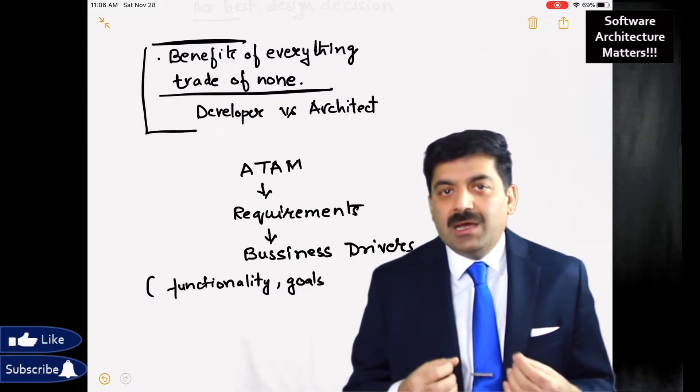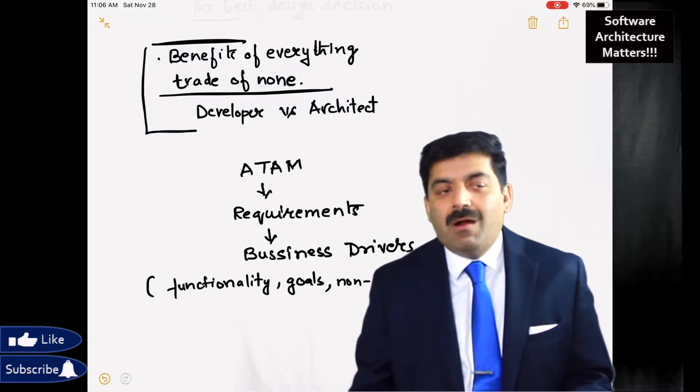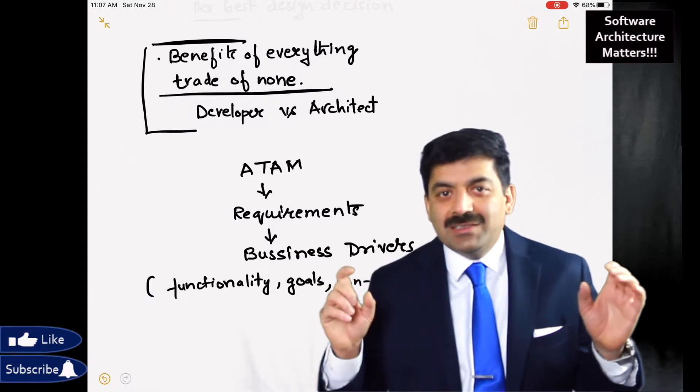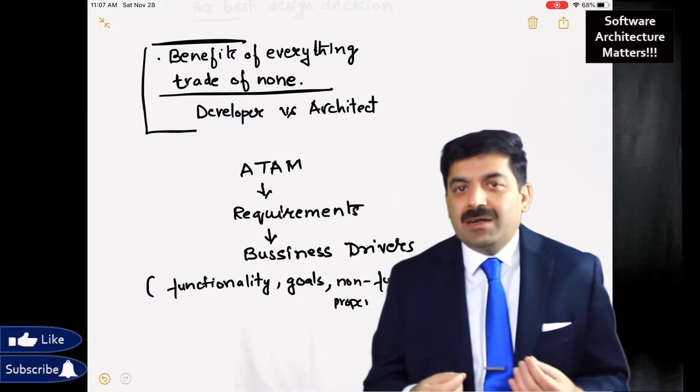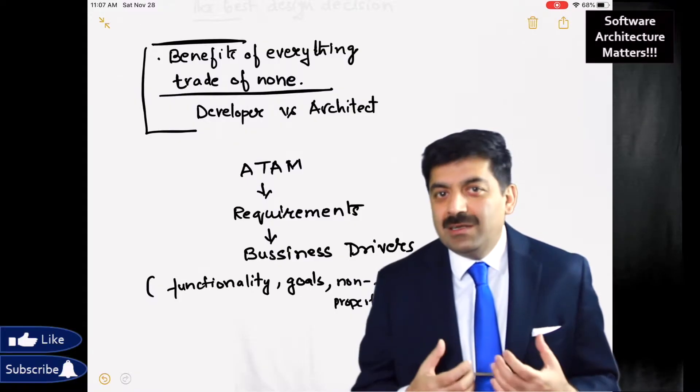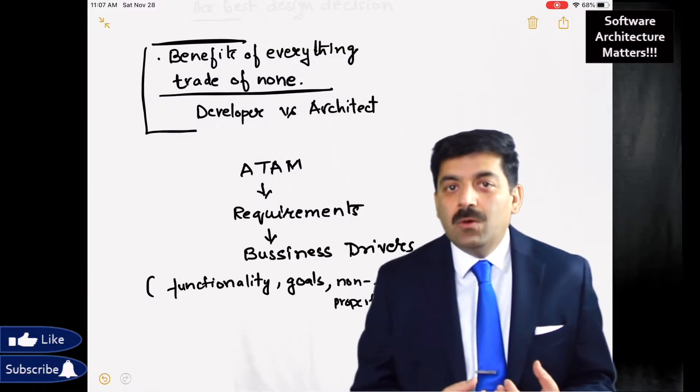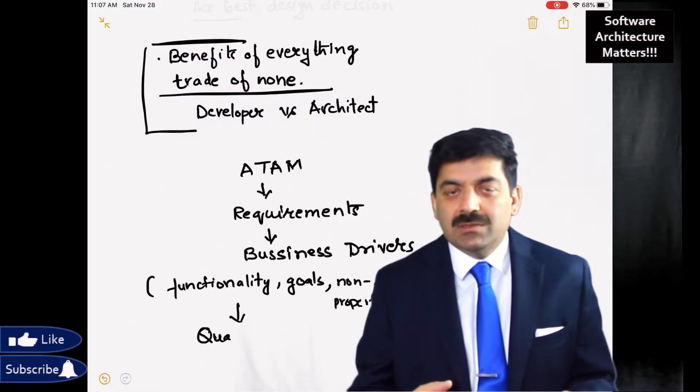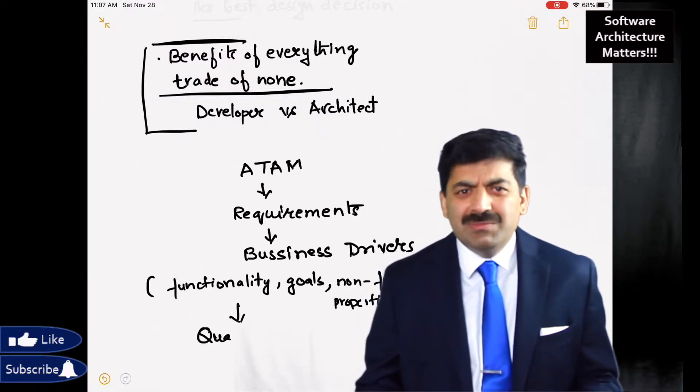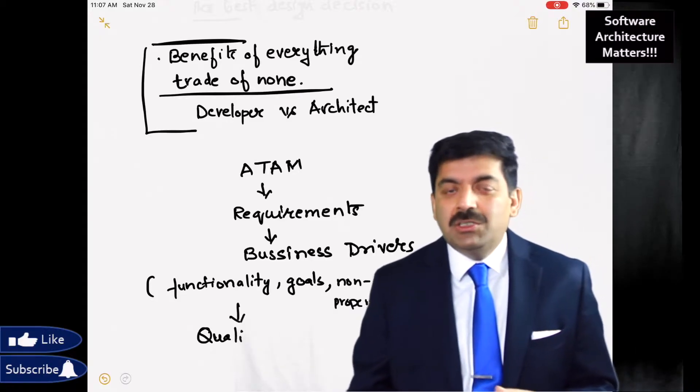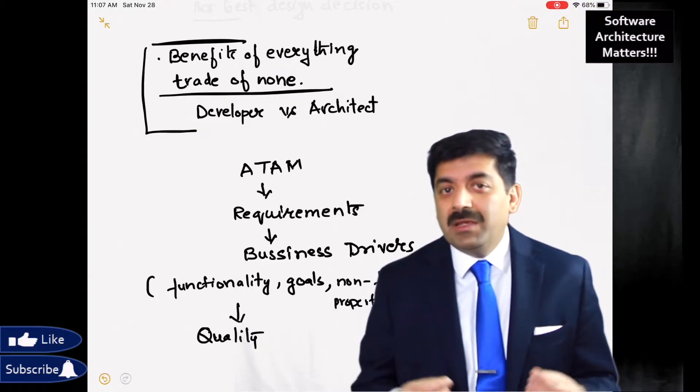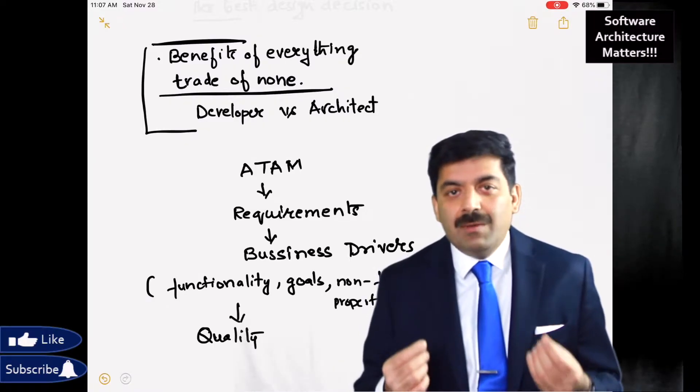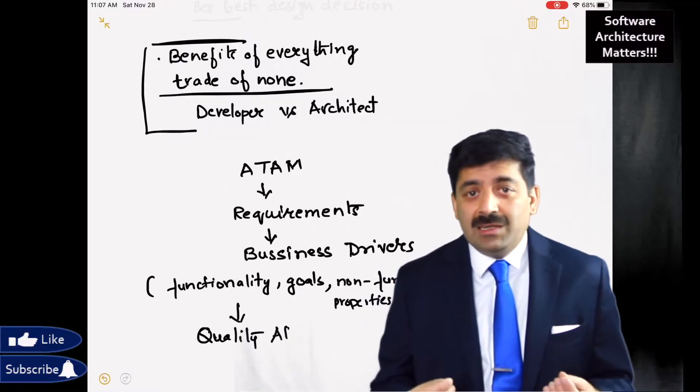From those requirements, you come up with quality attributes or as Neil or Mark say, architectural characteristics. Architectural characteristics are generally non-functional requirements. The application needs to be fast. Application could be used by million users. It may start with 100 users, it may go up to million users. So you have to design this application for scalability.